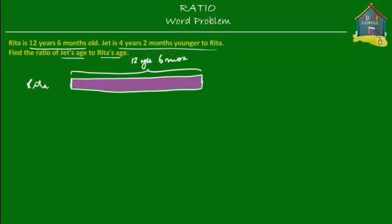Okay, then Jet is 4 years and 2 months younger than Rita. So let's suppose that this from here to here is 4 years and 2 months. Then Jet, his age would be about this from here to here, right, this size. So this is 4 years and 2 months which is how much younger Jet is compared to Rita.